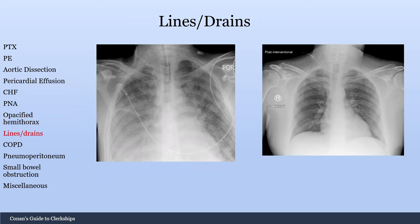Now let's look at some lines and drains. After placing an endotracheal tube, NG tube, or central line, you always get a chest X-ray to confirm placement. Here you can see this line in the trachea — this is an endotracheal tube in somebody who was recently intubated.